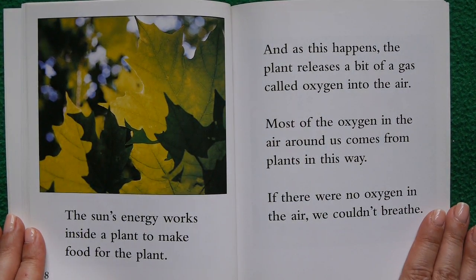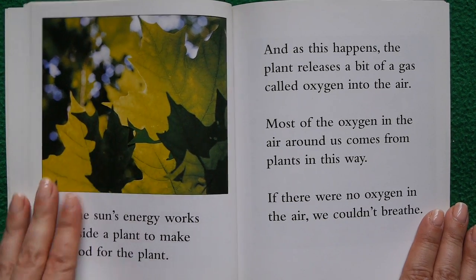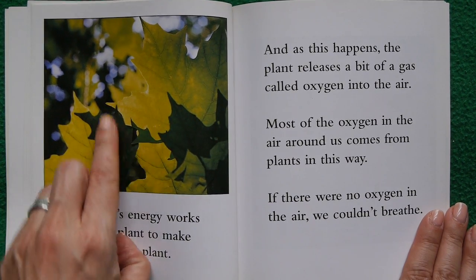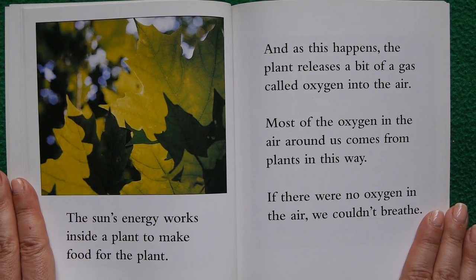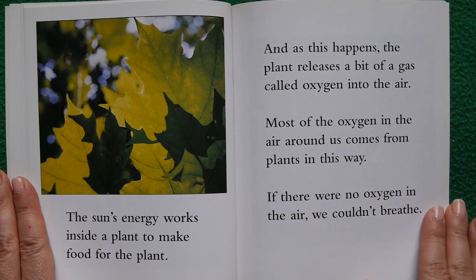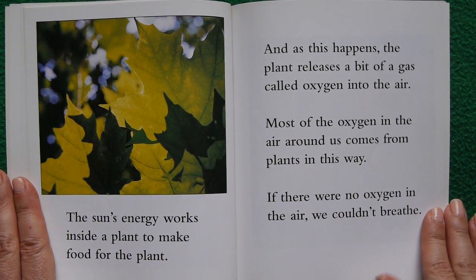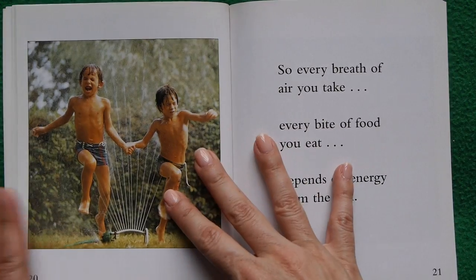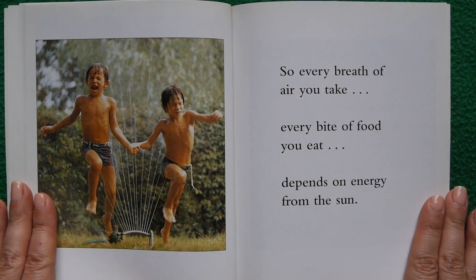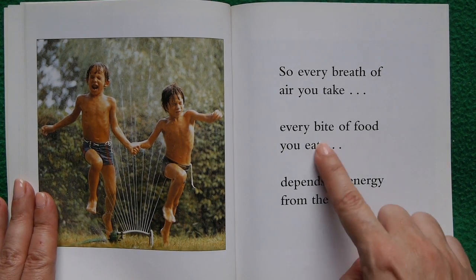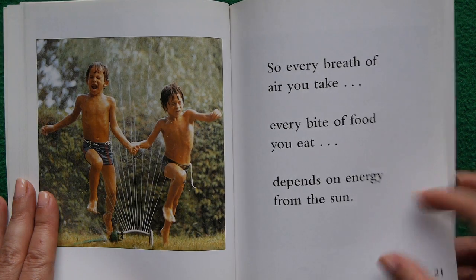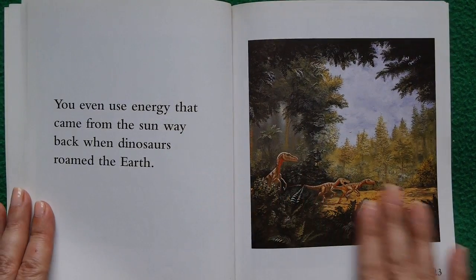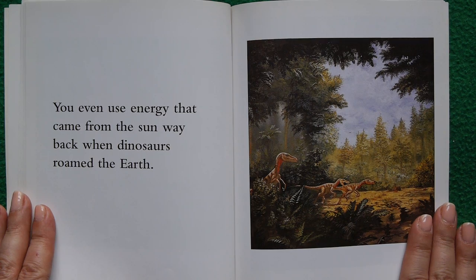The sun's energy works inside a plant to make food for the plant, and as this happens the plant releases a little bit of gas called oxygen. Most of the oxygen in the air around us comes from plants. If there were no oxygen in the air, we couldn't breathe. So every breath you take and every bite of food you eat depends on energy from the sun.